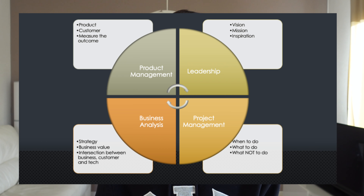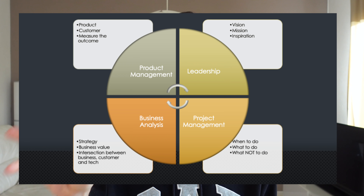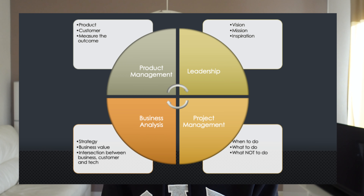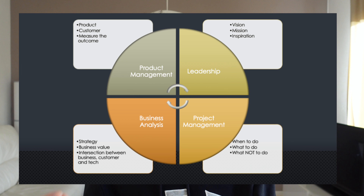I like more a definition from Bob Galen. He says that as a product owner, we have four quadrants of responsibilities. First, product management — to ensure we've solved the customer's problems, so we have the customer perspective. Then we have business analysis — we need to find ways to transform customer's problems into business opportunities. We also have the project management responsibility: when should we do what? And then we have leadership — we have to inspire people to dream more and put them on a mission. From my understanding, this is a better explanation of what it is to be a product owner. If we focus on that, we can succeed.